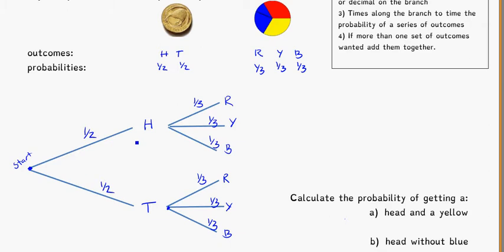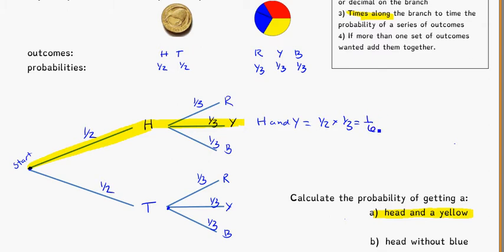If I need to figure out my probabilities, let's calculate the probability of getting a head and a yellow. One thing you can do is trace along the probability tree — using a yellow highlighter here for yellow. From the start, I'm going to get a head, and then I'm going to get a yellow. I times along the branch, so the probability of getting a head and a yellow is equal to 1 half times 1 third, which equals 1 sixth.